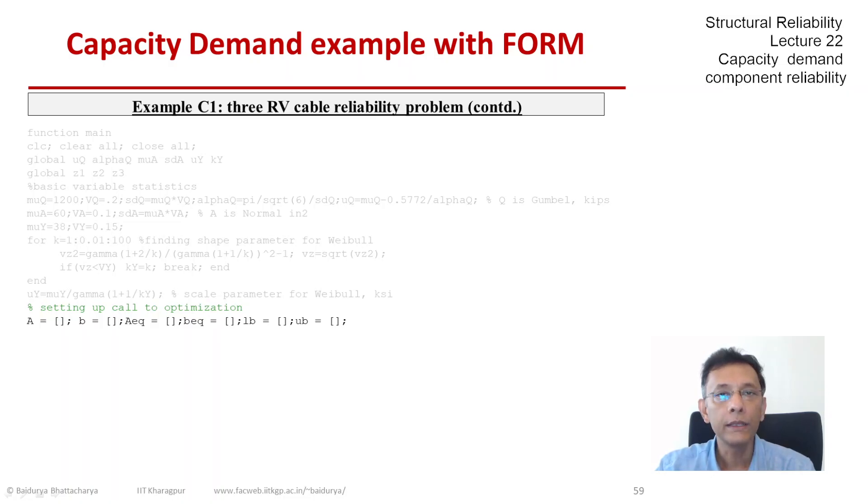Now we start the block of setting up the optimization. This line that you see are some default arrays and matrices that have to be defined in terms of constraints for that fmincon function. We will define the non-linear constraint, which would be given in function form constraint.